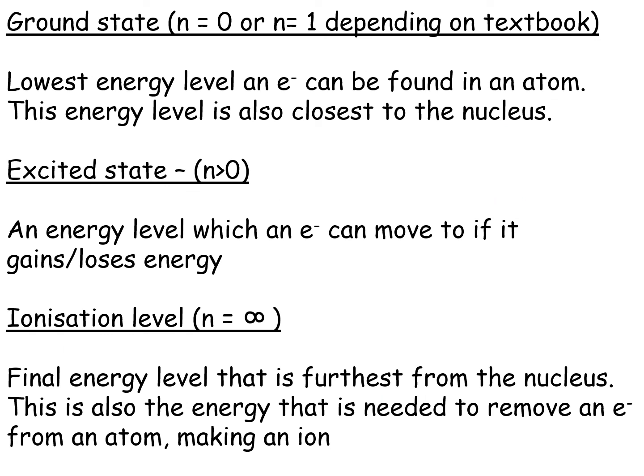Here's a summary of key terms. The ground state is the lowest energy level an electron can occupy, closest to the nucleus. The excited state is any energy level an electron moves to when it gains or loses energy. The ionization level is the final energy level furthest from the nucleus — it's the energy needed to remove an electron from the atom, making it an ion. We'll build on these ideas over the next two lessons.